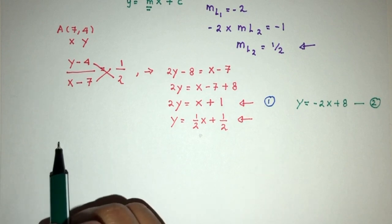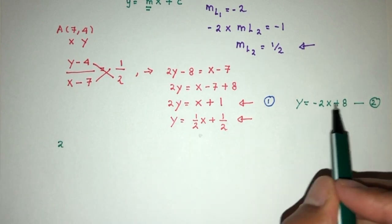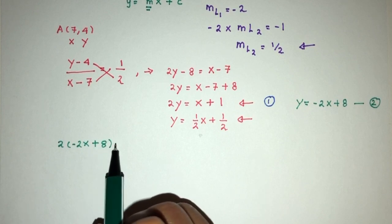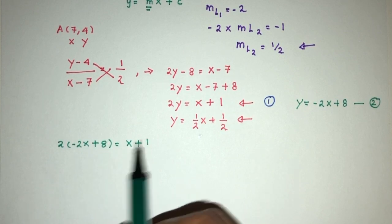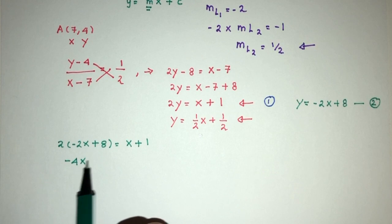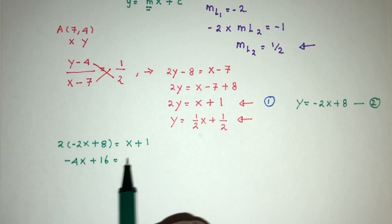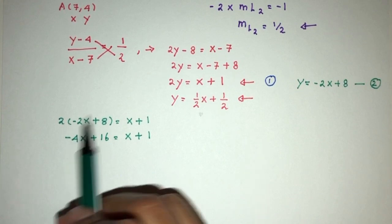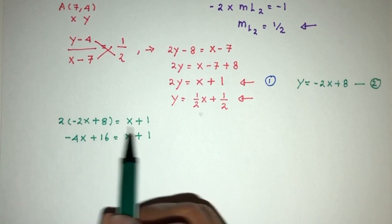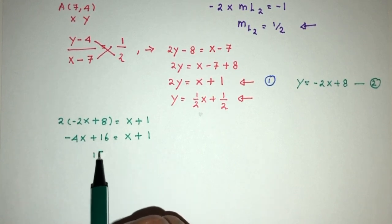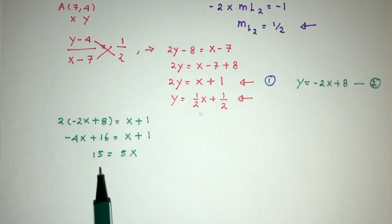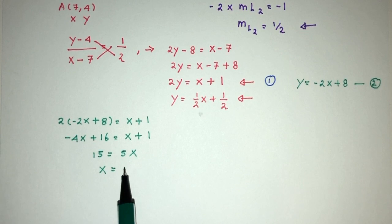So here we have 2y, replace y by this, you will have 2 times (minus 2x plus 8) equals x plus 1. So you will have minus 4x plus 16 equals x plus 1. So simplify, let's send this over here and send this over here. So 16 minus 1 will be 15, and x plus 4x will be 5x. So x will be 15 divided by 5, that should be 3.